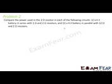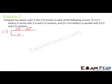Problem 2: Compare the power used in the 2-ohm resistor in each of the following circuits. The first circuit has a 6-volt battery in series with a 1-ohm and a 2-ohm resistor. The equivalent resistance is 1 + 2 = 3 ohms. Let current I flow through the circuit; since the resistors are in series, the same current flows through each.